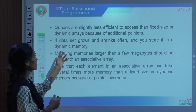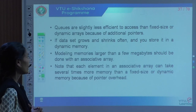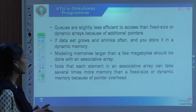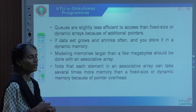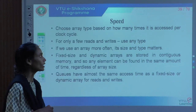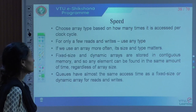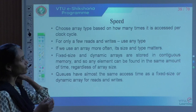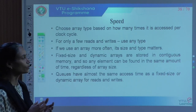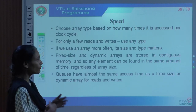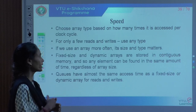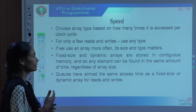If the data set grows and shrinks, it is better to store it in dynamic memory. For modeling memory larger than a few megabytes, it is better to go for associative memory. Note that each element in the associative array can take several times more memory than fixed or dynamic memory, so there may be overhead with respect to pointers. With respect to speed, choose an array type based on how many times it is accessed per clock cycle. For only a few reads and writes, any type is fine, but if you use an array more often, its size and type matters. Fixed size and dynamic arrays are stored in consecutive memory, so any element can be found in the same amount of time regardless of array size.